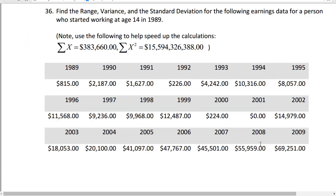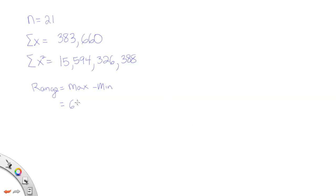Okay, so the largest value appears to be 69,251, and the smallest value in the list appears to be zero. So if you're going to subtract this zero from this 69,251, that'll actually be your range. So 69,251 minus zero, of course, gives you 69,251. So that's your range in the problem.